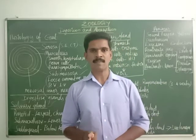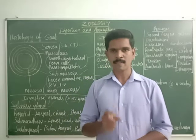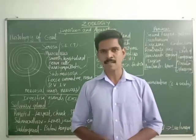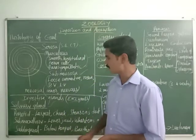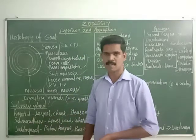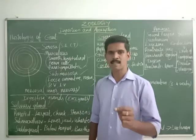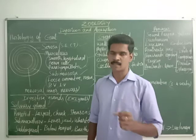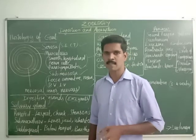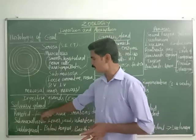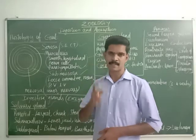There are three pairs of salivary glands present inside our mouth. The first salivary gland is called the parotid gland, and it is the largest gland among the three salivary glands.